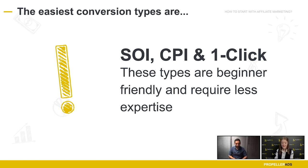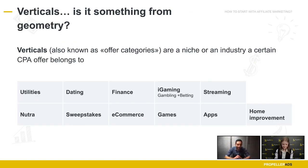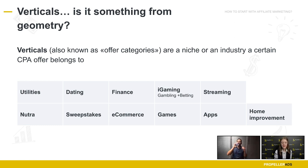The easiest conversion flow types are Single Opt-In (SOI), Cost Per Install (CPI), and One-Click flows — because the user converts easily with minimal friction, meaning you get paid easily and can continue scaling.